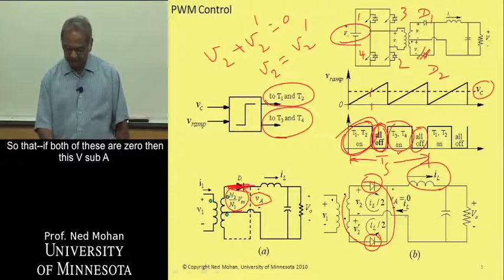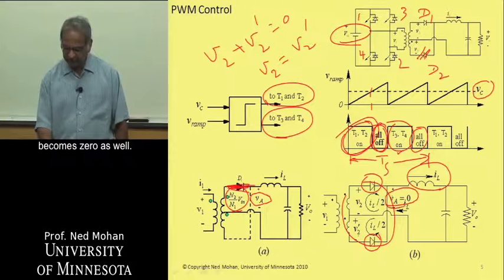can only be valid if each one of them is 0. So that, if both of these are 0, then this V sub A becomes 0 as well.